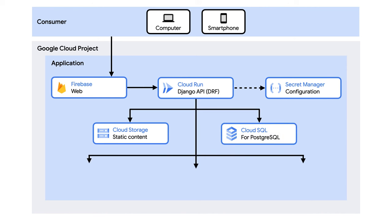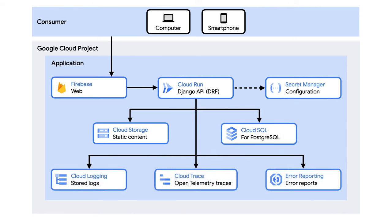Cloud Logging stores logs, Cloud Trace stores OpenTelemetry traces, and Error Reporting stores error reports — all sent by other Cloud products and the Cloud Run platform. This data is what enables monitoring for correct application behavior and troubleshooting of unexpected behavior.